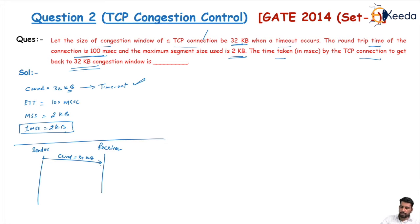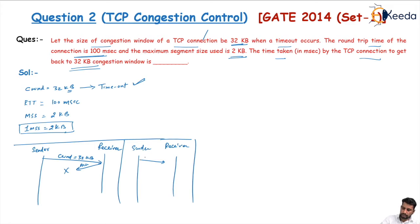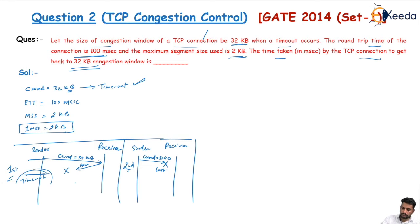A timeout can occur in two ways: either the acknowledgement is lost, or the packet itself may be lost. In both cases, a timeout will occur, indicating high congestion in the network.